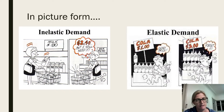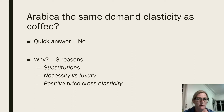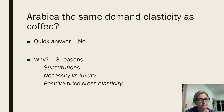Getting back to the question: is the demand elasticity the same or different? I believe that the demand for Arabica would be elastic in comparison to coffee, which is inelastic. There are a few reasons why I believe this to be so — substitutions that exist within the category, positive price cross elasticity, and I'm also going to use necessity versus luxury to give some more weight to my argument.